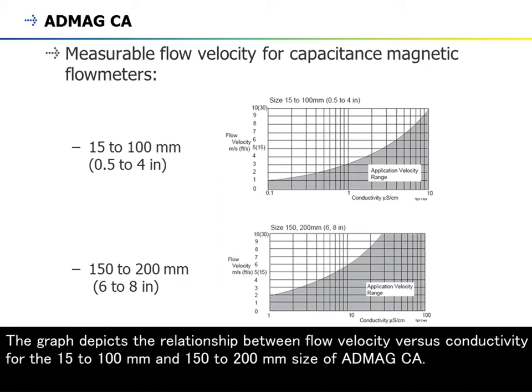The graph depicts the relationship between flow velocity versus conductivity for the 15 to 100 millimeters and 150 to 200 millimeters sizes of Abmec CA.